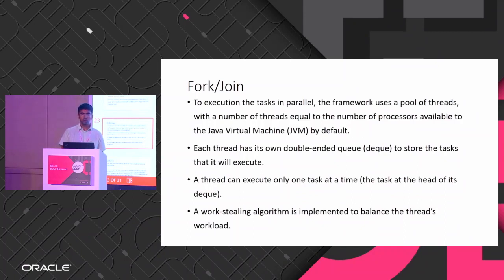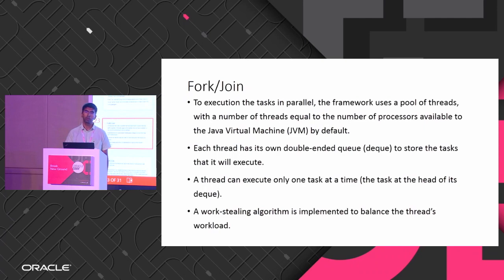As there are multiple tasks divided between threads, these tasks are added to the DQ of each thread. When a particular thread has no task, it can go and steal from another thread's DQ. That's the work-stealing algorithm implemented in the Fork/Join framework.